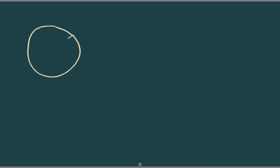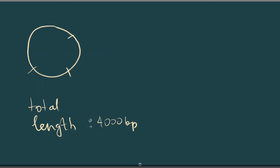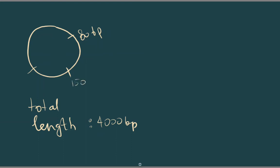Now, if we go backwards — let's say we know the restriction sites and the total length. The total length will be 4000 base pairs, the first restriction site will be at 80, the second at 1500, and the third at 3000 base pairs.